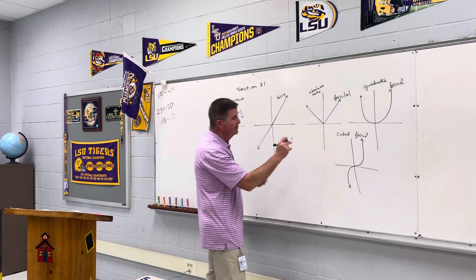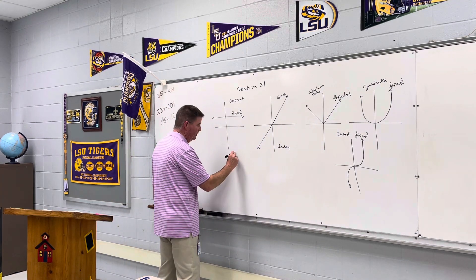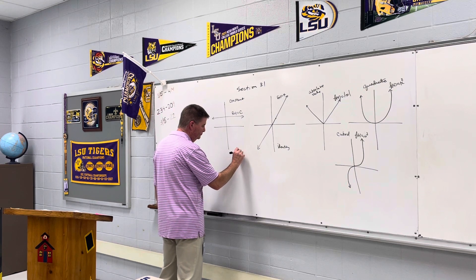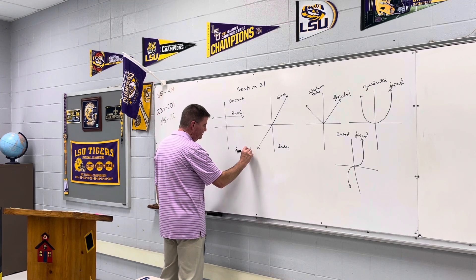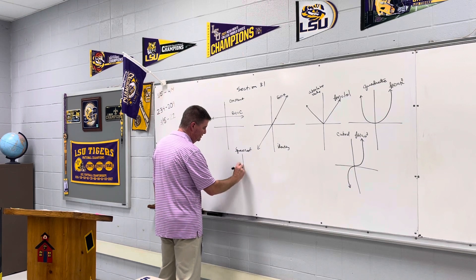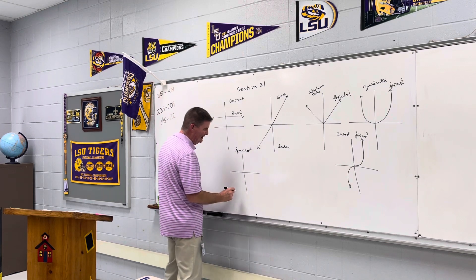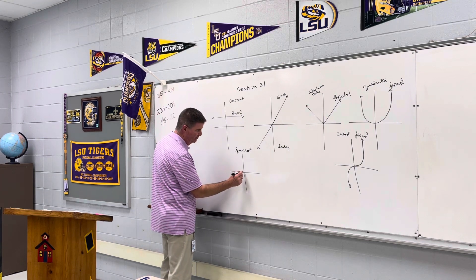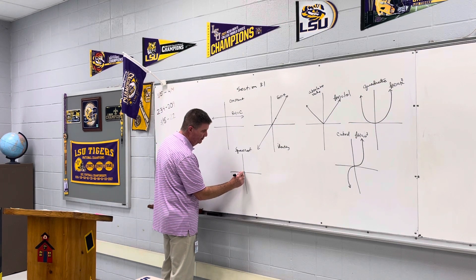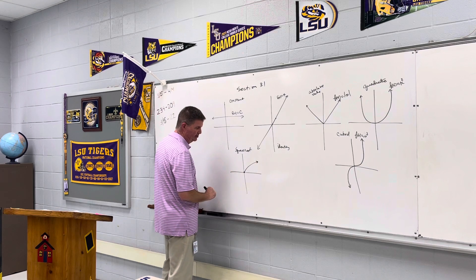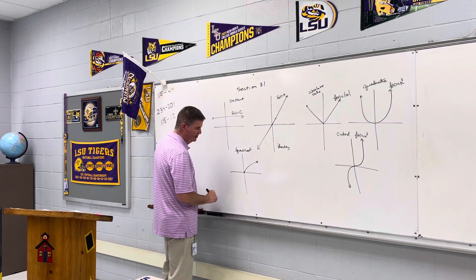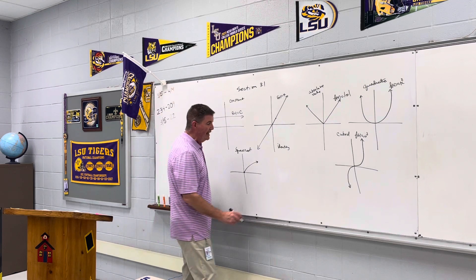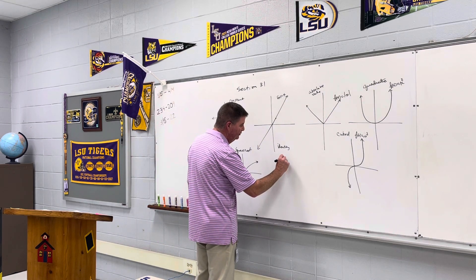Then we have the inverses, starting with the square root function. The square root function does not exist for negative numbers — you can't have the square root of a negative number — so it starts at zero and goes off to the right.